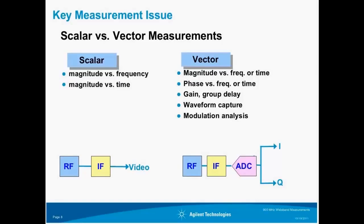A vector measurement is one in which a final IF or RF, as in the case of our Infiniium scope, is low-pass filtered, sampled, and quadrature mixed to form I and Q pairs, used to measure magnitude versus frequency or time, phase versus frequency or time, gain, and group delay. We can also perform modulation analysis and capture waveforms. Many people need a spectrum analyzer for measurements such as harmonics, intermod, and EMI. Others require the speed that banded FFT-based analyzers like the VSA offer, or the ability to analyze transient signals and make recordings. We're going to demonstrate that you no longer need to choose between the two — you can have both on the same instrument.